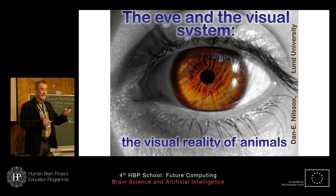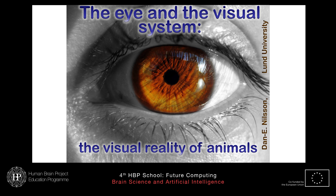If you want to work out how visual information is processed and how that can lead to and generate behaviour, it's actually pretty good to have a more general view — not a human-centred view of how vision works. So that's what my lecture is going to be about: what animals use their eyes for, how eyes work, the limits of vision, and then towards the end, how animals actually process information.